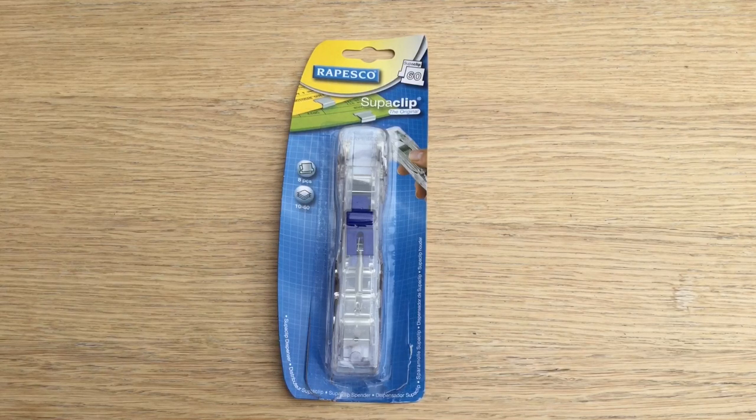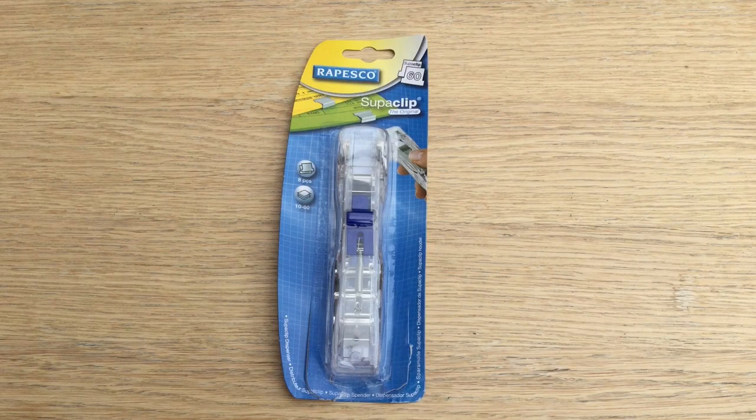The 60 refers to the maximum number of sheets they're designed for, based on 80 GSM paper. So the 60 is designed for a maximum of 60 sheets. If you're joining up to 40 sheets, you'll get a better grip with the smaller superclip 40 clips.